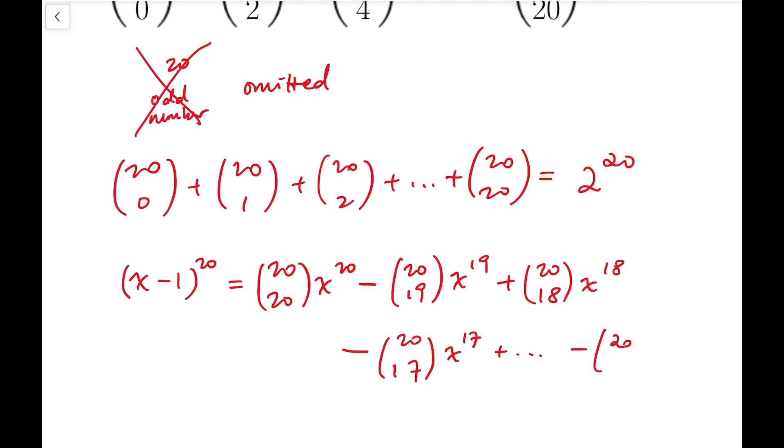And then last we'll have minus 20 choose 1 x plus 1 again because constant term means 0 power and that's even.